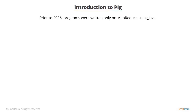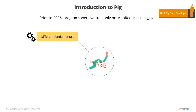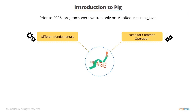Prior to 2006, programs were written only on MapReduce using Java programming language. Developers had to mind the map, sort, shuffle, and reduce fundamentals while creating a program, for which they needed common operations such as joining, filtering, and so on. The challenges kept building up while maintaining, optimizing, and extending the code. Consequently, the production time increased.